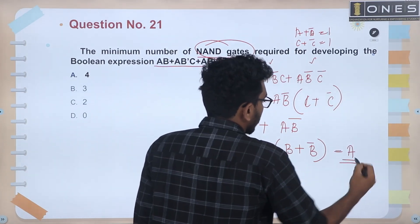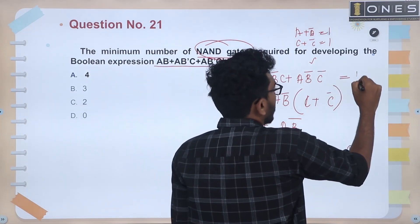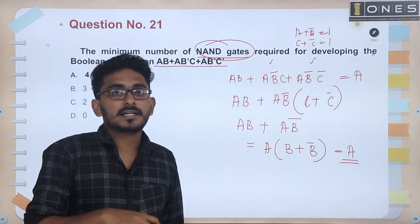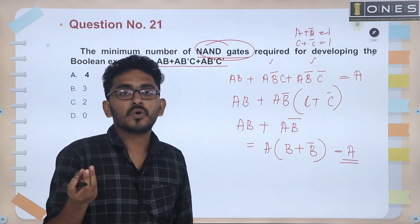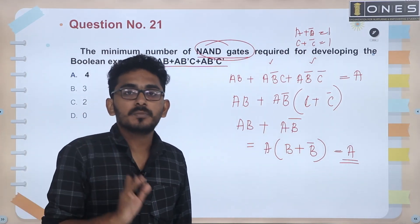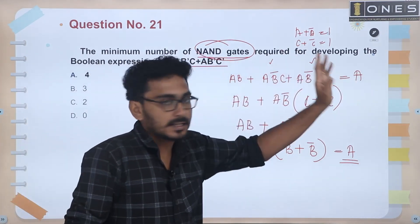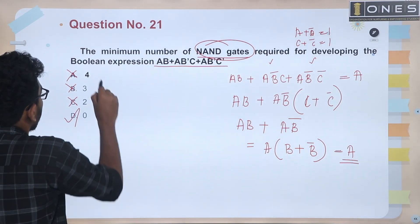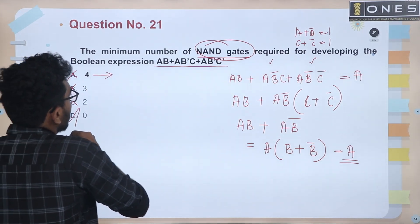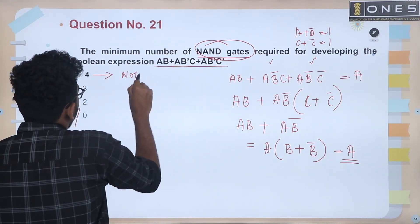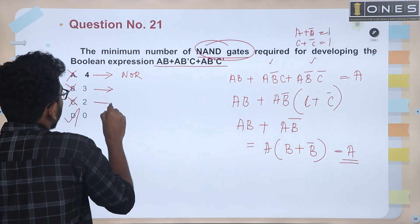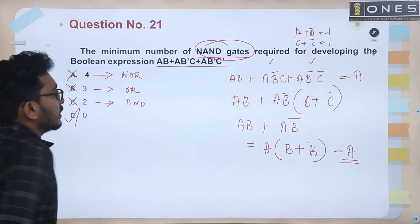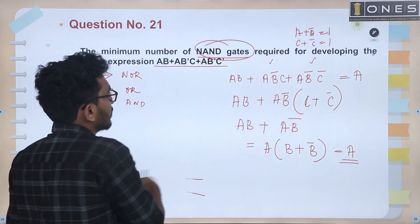So the equation is equal to A. A is equal to A. Now, if you apply a NAND gate with a single input, A will be the output. The minimum number of NAND gates required for realizing this Boolean expression is determined. This is the minimum number of NAND gate requirement for the Boolean expression.